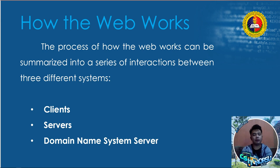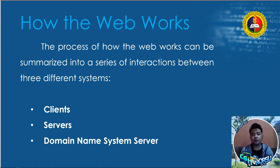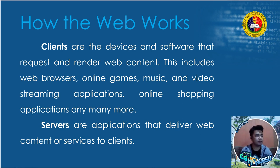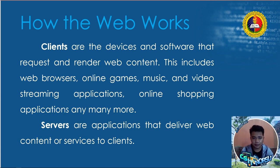The last topic for this class is how the web works. The process of how the web works can be summarized into a series of interactions between three different systems: clients, servers, and the Domain Name System (DNS) servers. Clients are the devices and software that request and render web contents — this includes web browsers, online games, music and video streaming applications, online shopping applications, and many more. Servers are applications that deliver web contents or services to clients. The DNS server is a hierarchical naming system for network devices — it serves like a phone book of the Internet, but instead of phone numbers, it uses IP (Internet Protocol) addresses.